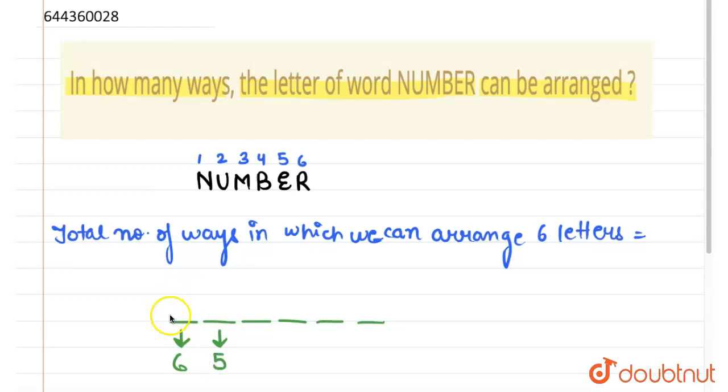If we place a letter in the third position, then we are left with four choices because we have already placed alphabets on the first two positions. And so on we are left with three choices, we are left with two choices, we are left with one choice.